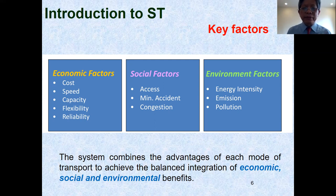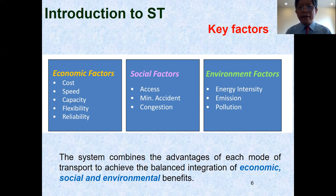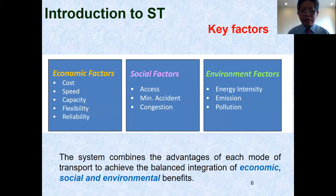For the social aspect, the key factors include access, minimum accidents, and also minimum congestion. For the environmental aspect, the key factors include energy intensity, emission, and pollution. This means that a sustainable transportation system is a system that combines the advantages of each mode of transport to achieve a balanced integration of economic, social, and environmental benefits.